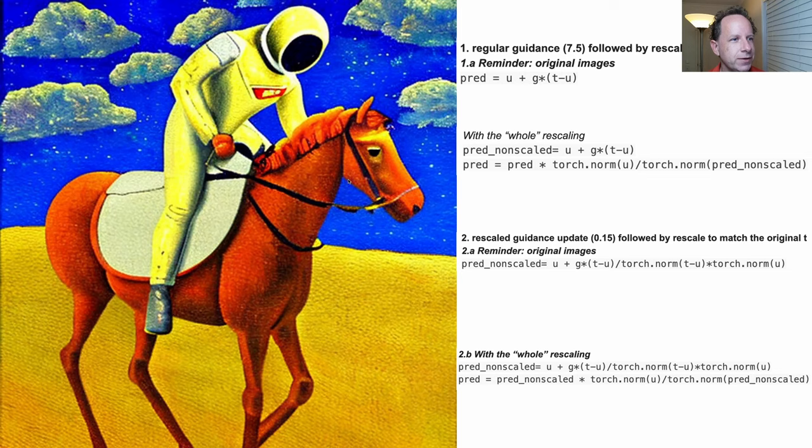Big difference: we get a nice background, this weird thing on his back has become an arm. That's not what a foot looks like — that is what a foot looks like. These little details make a big difference, as you can see. So these are two really cool new things.